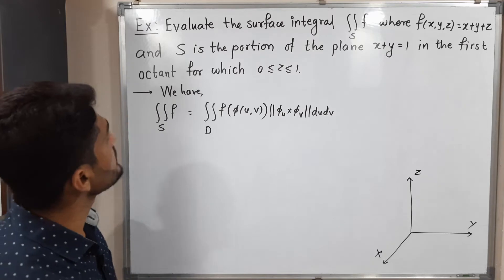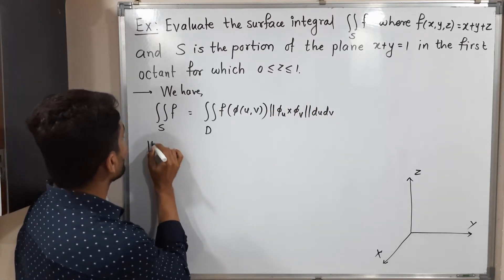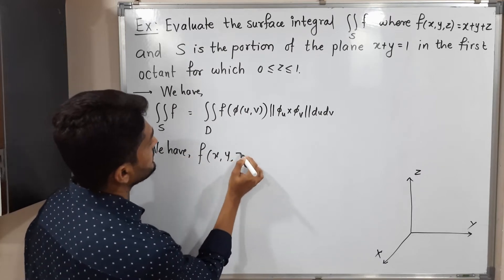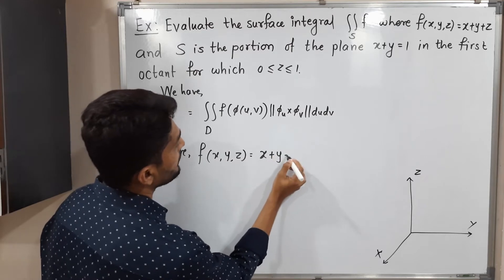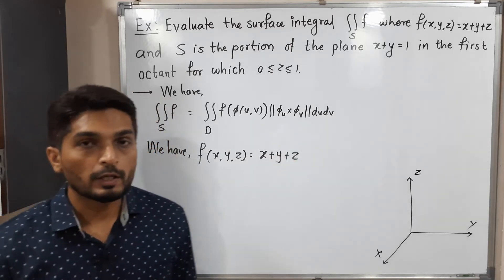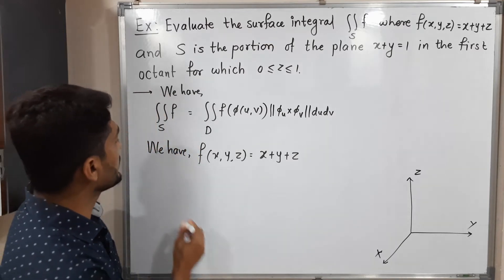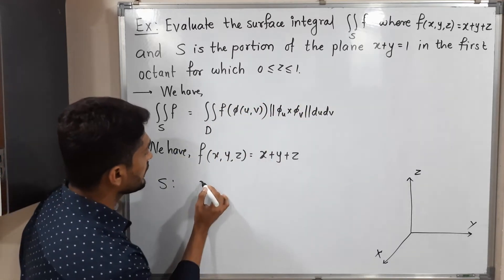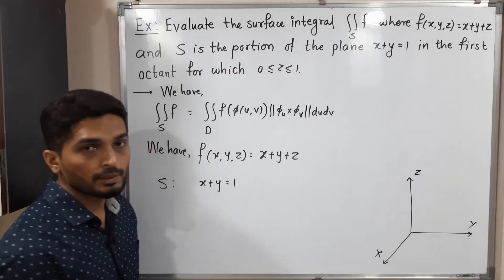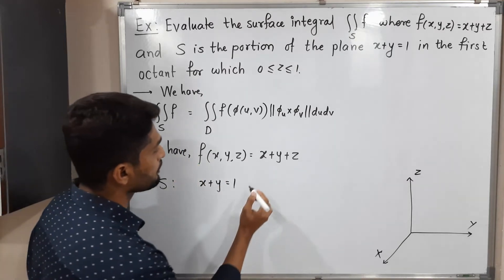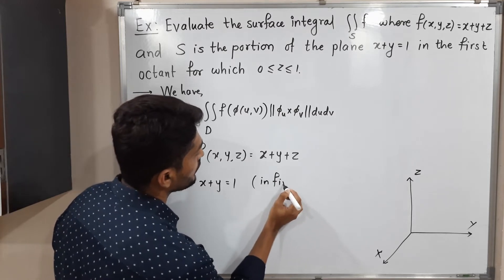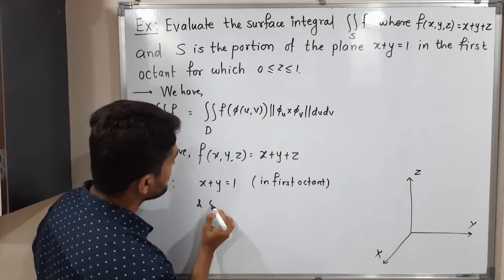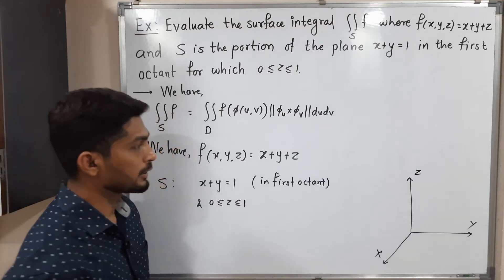The given function is f(x,y,z) = x + y + z. The surface s is a portion of the plane x + y = 1, located in the first octant only, with the condition that 0 ≤ z ≤ 1.